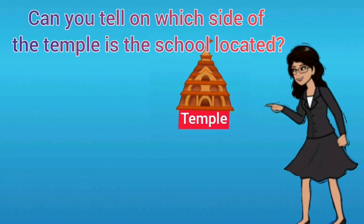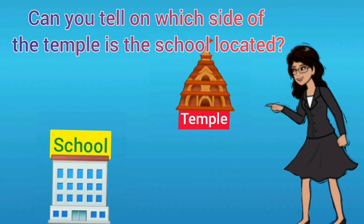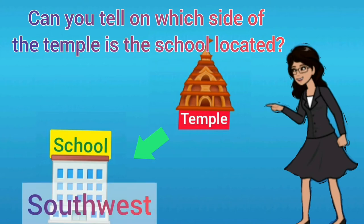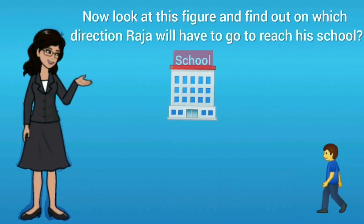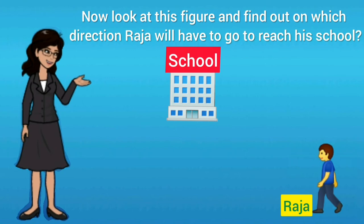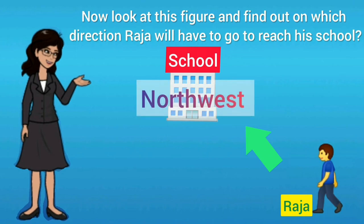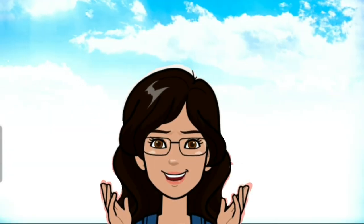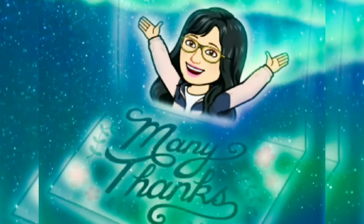Let us try to locate some places with the help of these intermediate directions. The school is located to the south-west of the temple. Now look at this figure and find out in which direction Raja will have to go to reach his school — he will have to go north-west. In the next video we will continue with symbols. Thank you everyone.